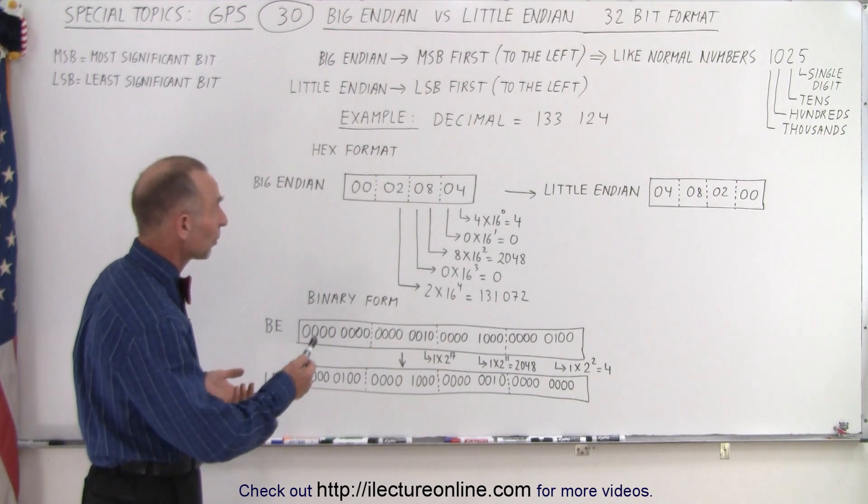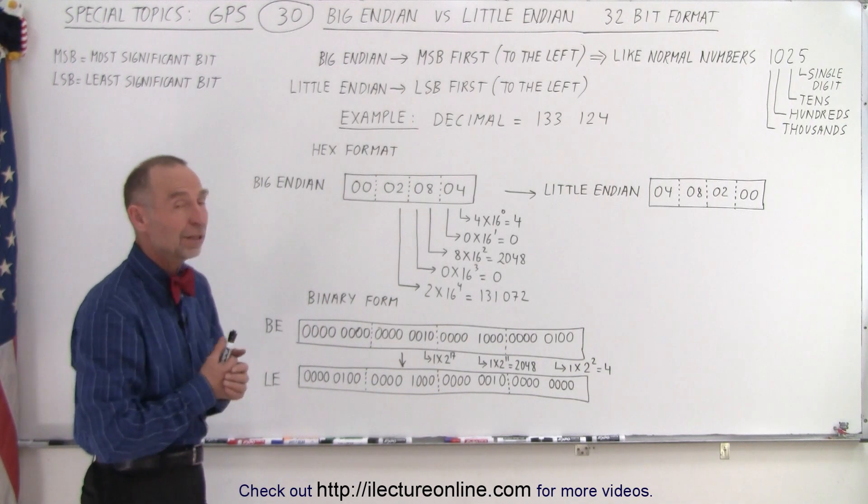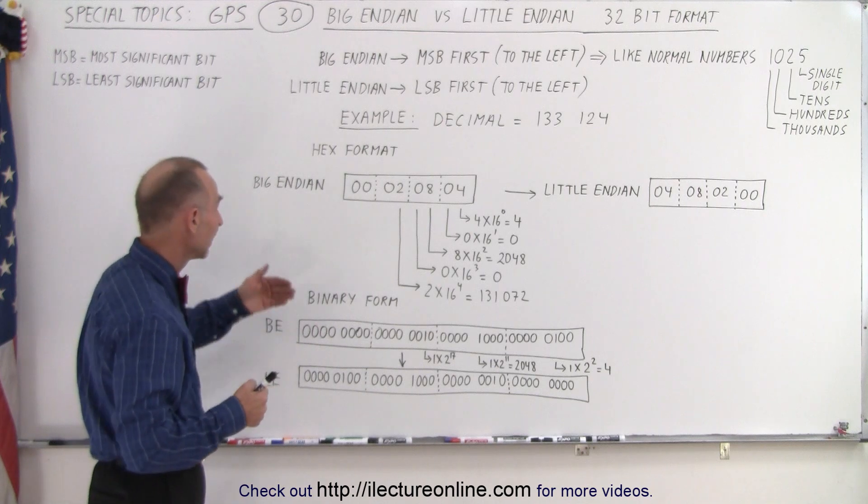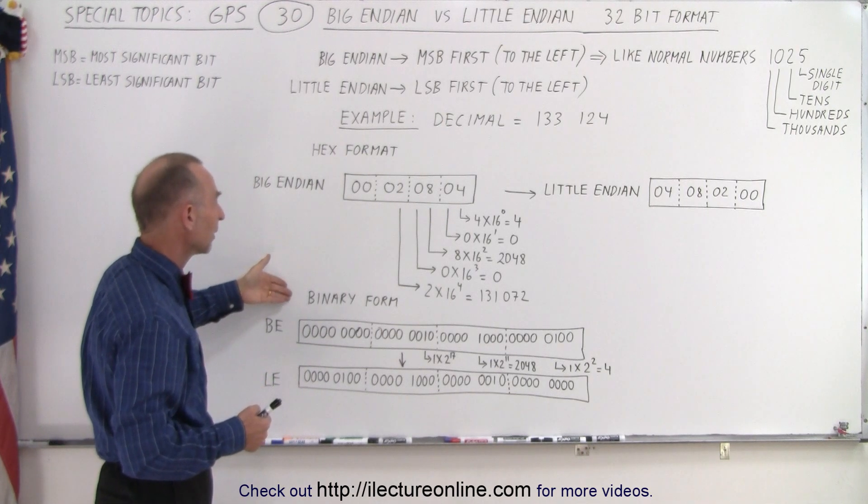So what we have here is a decimal number 133,124. How do we represent that in hex and how do we represent that in binary?